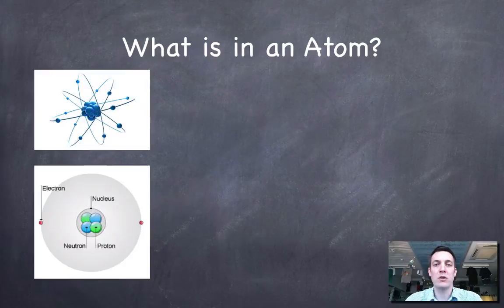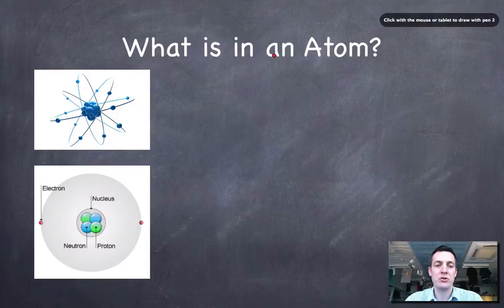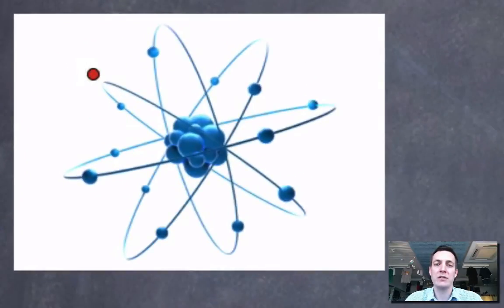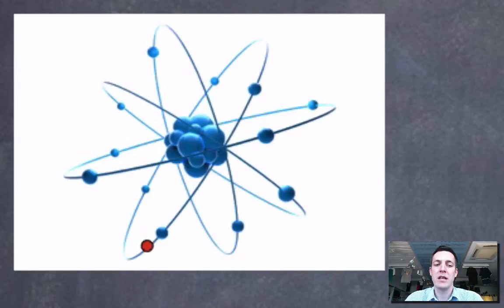Let's start off by looking at what's in an atom, and this should be fairly familiar to you by now. I'm just going to talk a little bit about the difference between some of the diagrammatical representations of atoms. What we're probably quite used to seeing is this kind of model of an atom with the nucleus at the centre and the electrons orbiting around this nucleus in these kind of clearly defined paths.